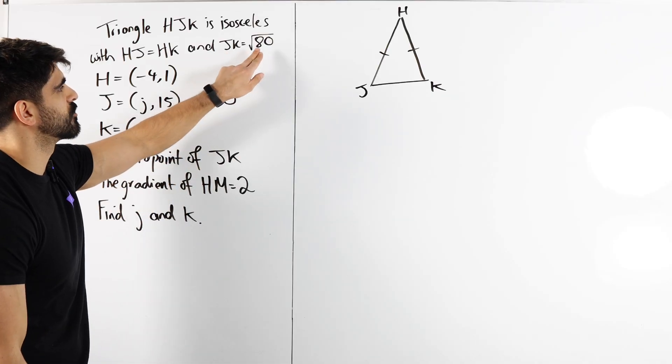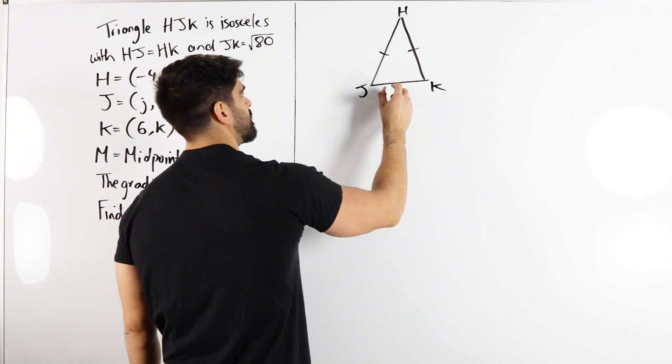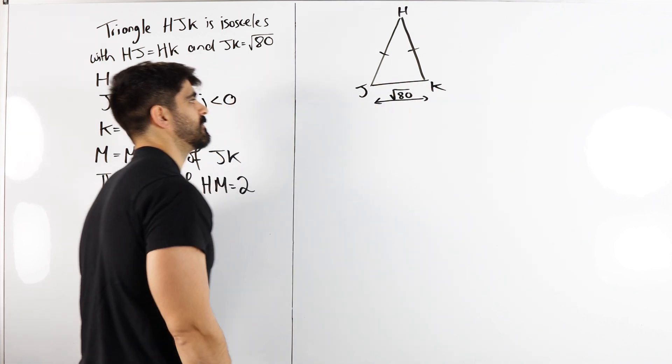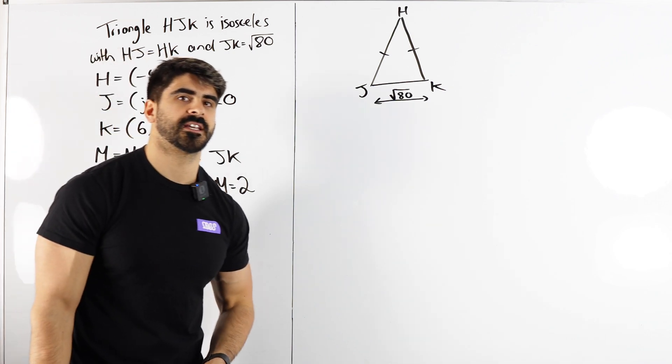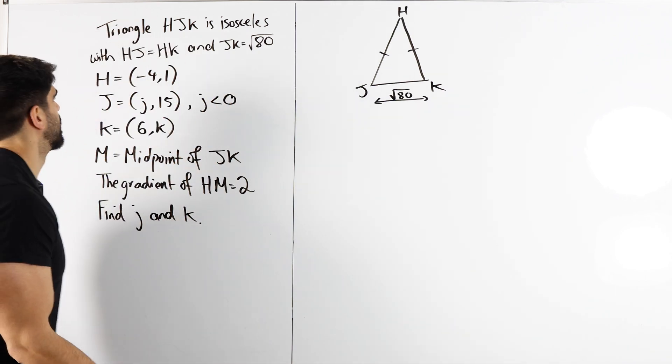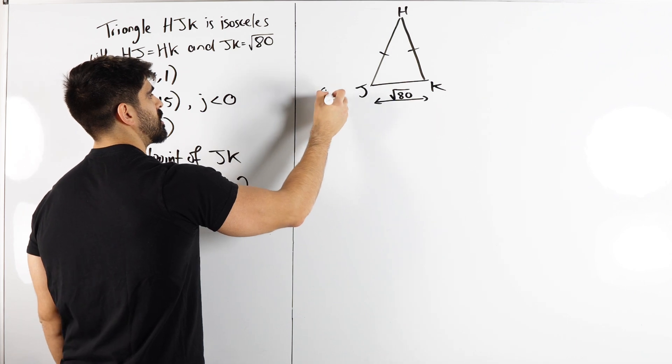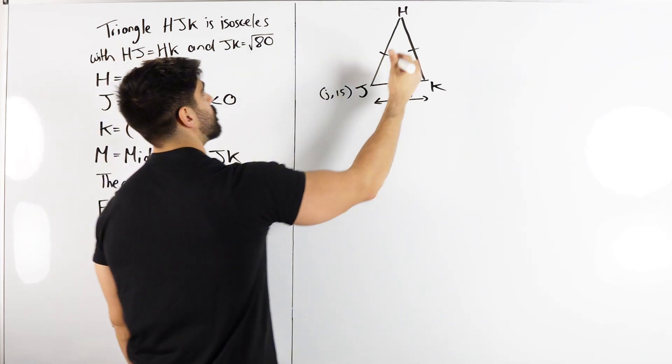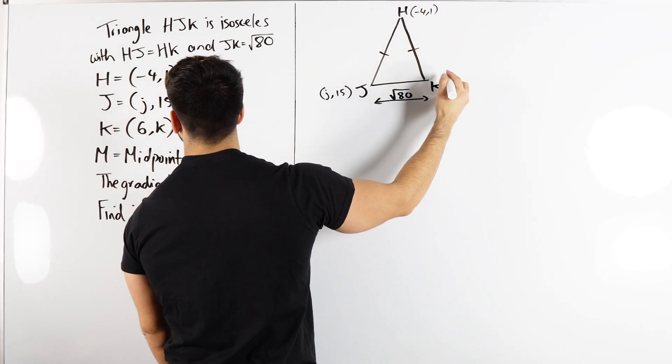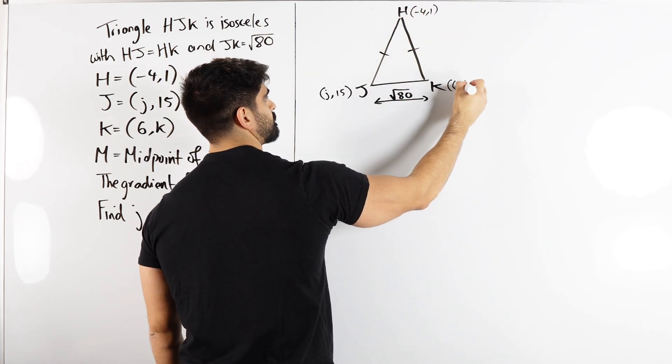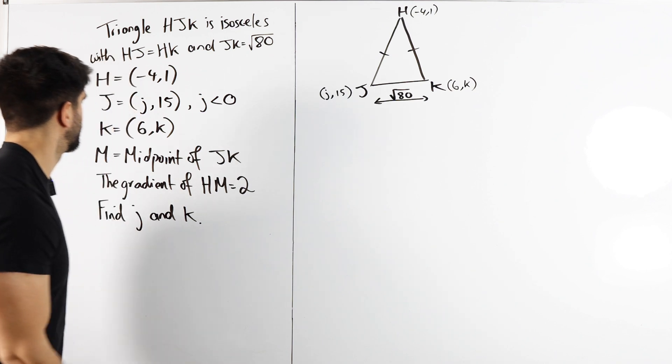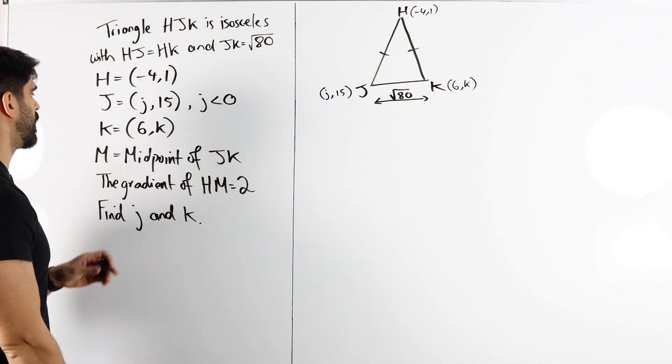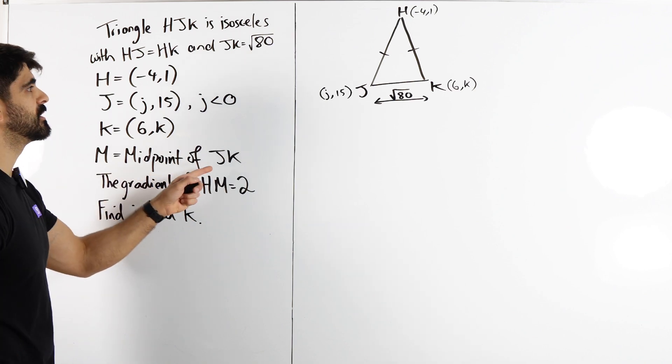So JK is √80, which they didn't even simplify, which gives me an indication that it's probably a non-calculator question. We have J which is (J, 15), H is (-4, 1), and K is (6, K). M is the midpoint of JK.